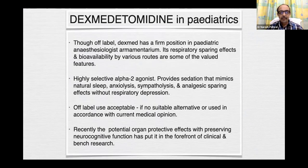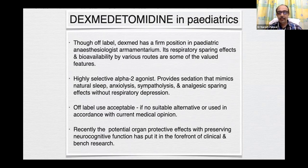Coming to dexmedetomidine in pediatrics — though off-label, dexmed has a firm position in pediatric anesthesiologists' armamentarium. Its respiratory-sparing effect and bioavailability by various routes are notable features. It is a highly selective alpha-2 agonist that mimics natural sleep, anxiolysis, sympatholysis, and has analgesic-sparing effects without respiratory depression. Off-label use is generally acceptable if there is no suitable alternative or when used in accordance with current medical opinion.